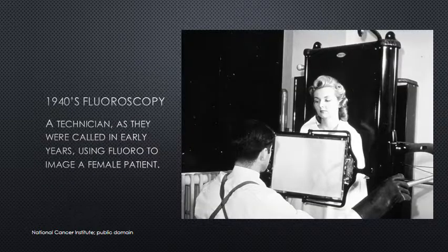In the 1940s, we're looking at a technician — as they were called in the early years — using fluoro to image a female patient. The technician is sitting in front of the plate looking at the screen while the source is behind the female, so all the direct source radiation is hitting him right in the face. You do notice, however, that he is wearing rubberized gloves.